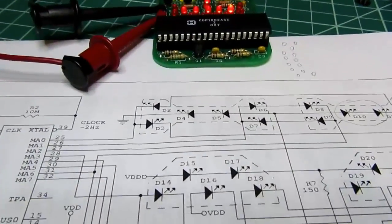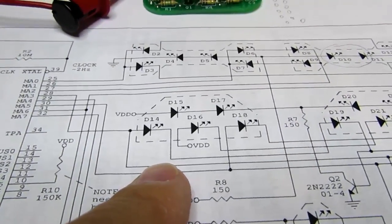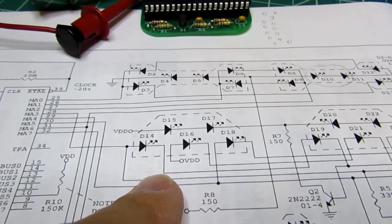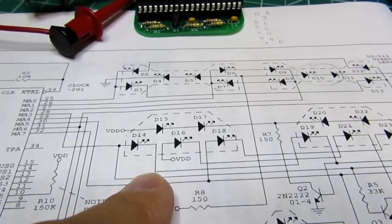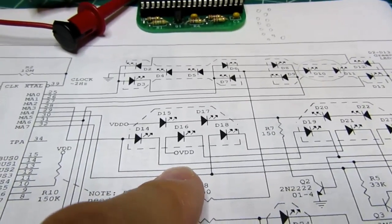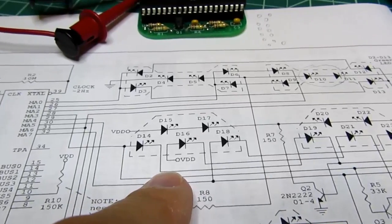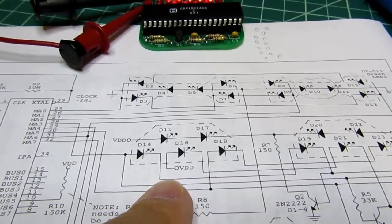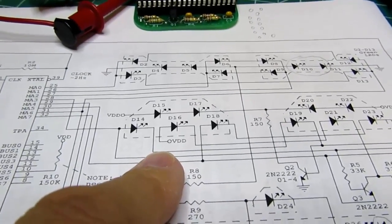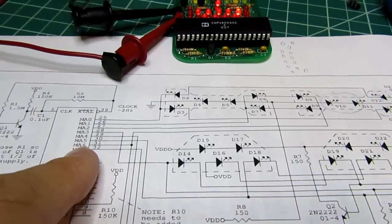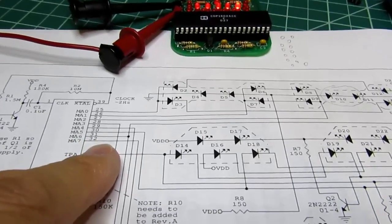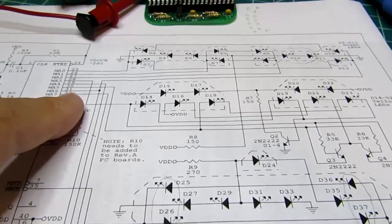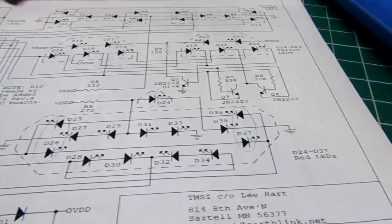The various resistors that are on there of different values are there to get the appropriate current through each LED circuit. There are different numbers of them in series, so you have to change the resistors to get the appropriate current through them and get a more or less uniform amount of illumination, and also not pull too much current out of, or sink too much current, depending, out of the address lines.